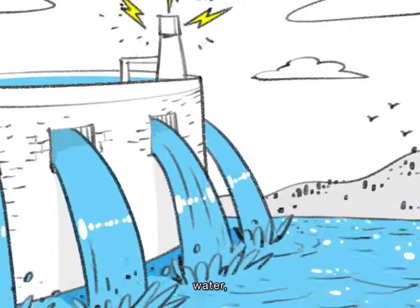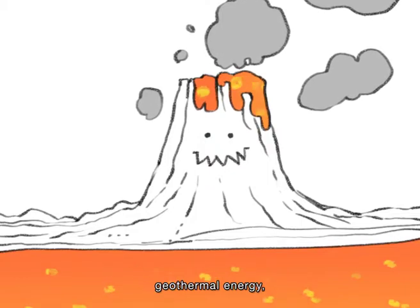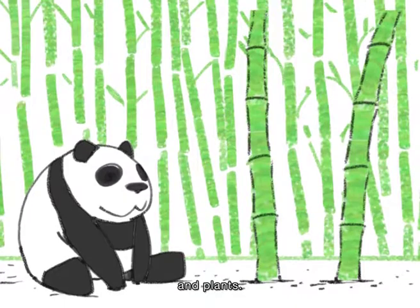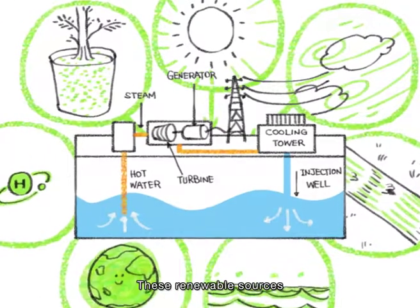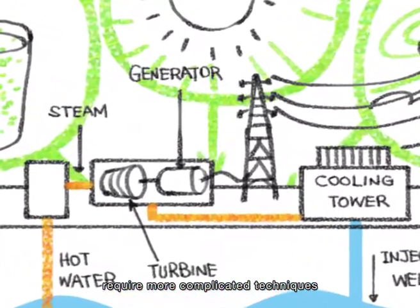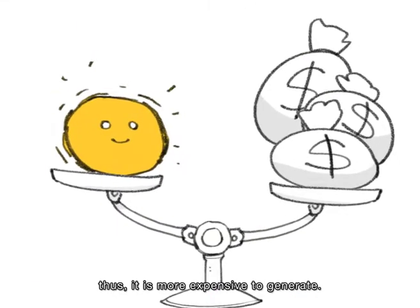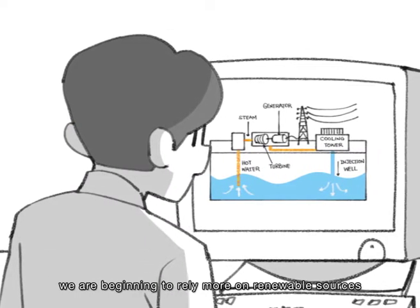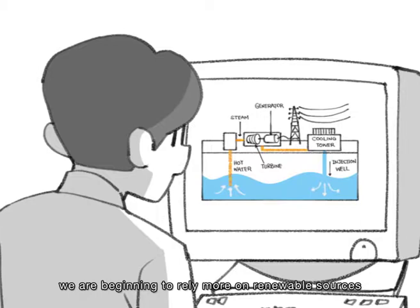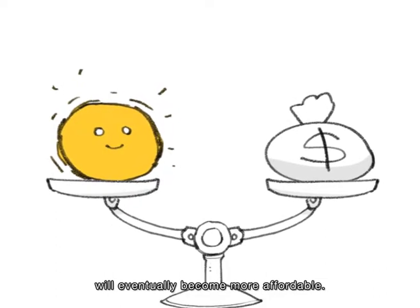Renewable sources include water, ocean waves, geothermal energy, hydrogen, and plants. These renewable sources require more complicated techniques to turn them into usable energy, and thus it is more expensive to generate. With the advancement in technologies, we are beginning to rely more on renewable sources, and energy generated from them will eventually become more affordable.